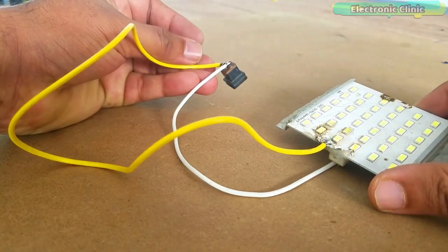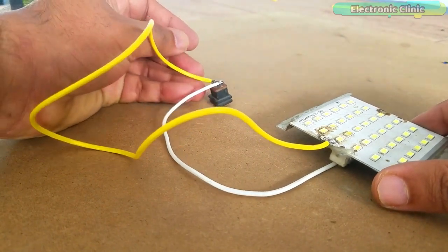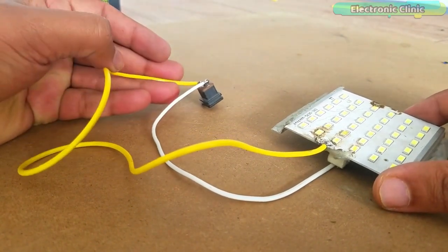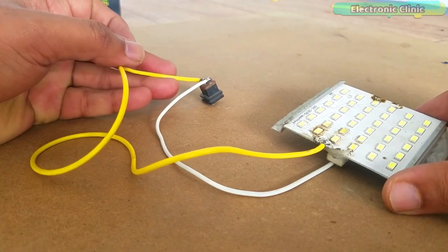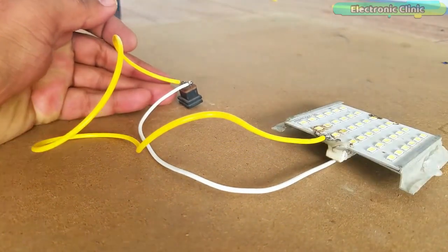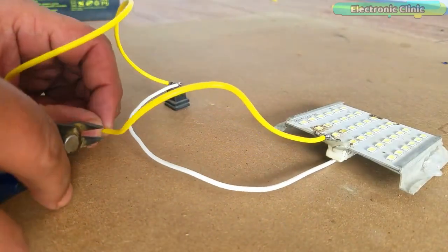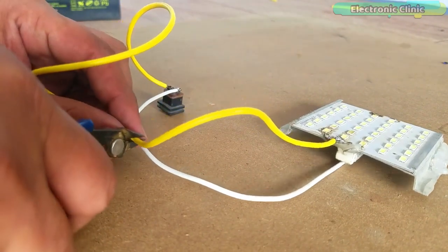As you can see a DC female power jack is soldered with the plus and ground of the MC PCB DC 12V LED bulb.